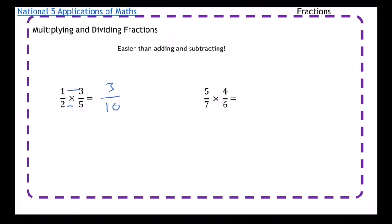With the second one 5 over 7 times 4 over 6. Again like train tracks multiply along the top multiply along the bottom. So you do 5 times 4 which is 20 and 7 times 6 which is 42.